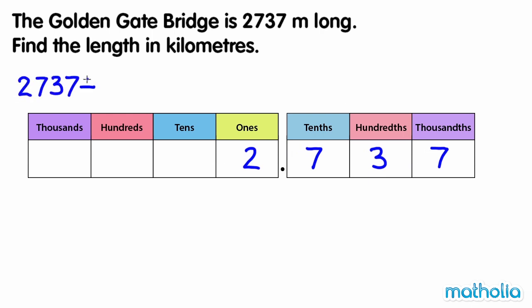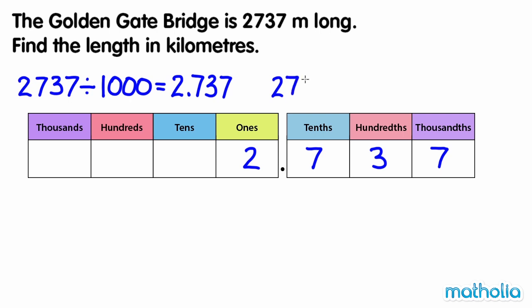2737 divided by 1000 equals 2.737. So 2737 metres equals 2.737 kilometres.